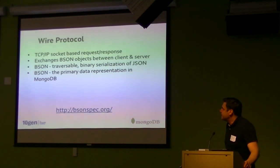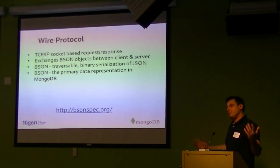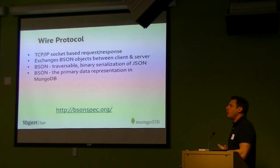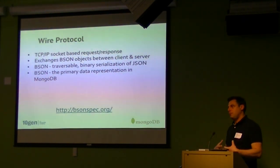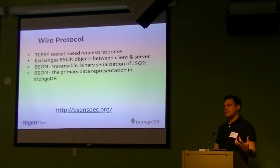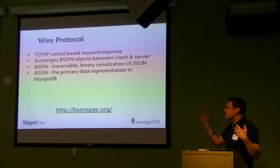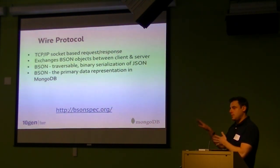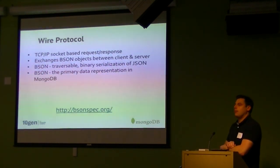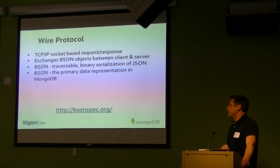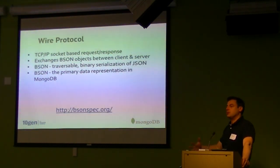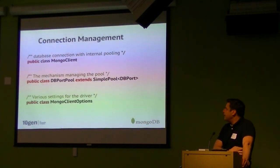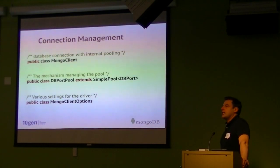The wire protocol is a TCP/IP socket-based connection back to the server. All data exchange is through BSON. You can think of everything you're interacting with in MongoDB as basically through JSON objects — there are some protocol headers, but almost everything you'll see is through JSON, translated to BSON over the wire protocol. It's the primary representation of data within MongoDB. The BSON format allows us to traverse the document and locate fields within it.